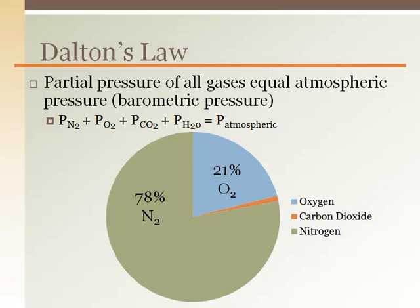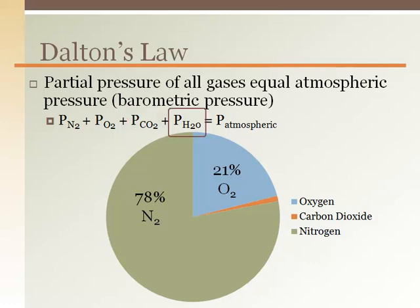Dalton's Law states that the atmospheric pressure, or barometric pressure outside, is the sum of all the gases together. The equation represents this as a capital P for partial pressure, with the gas type as a subscript: N2 for nitrogen, O2 for oxygen, CO2 for carbon dioxide, and H2O for water.